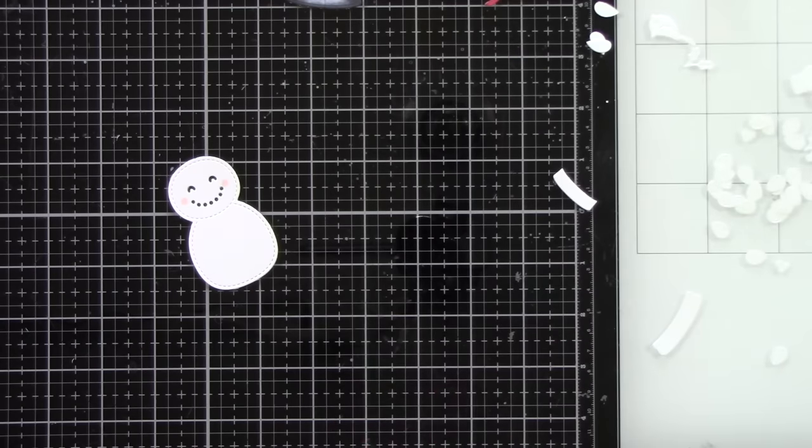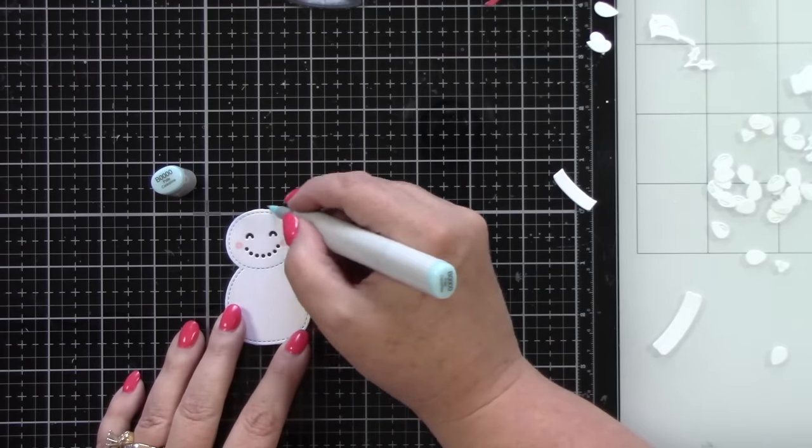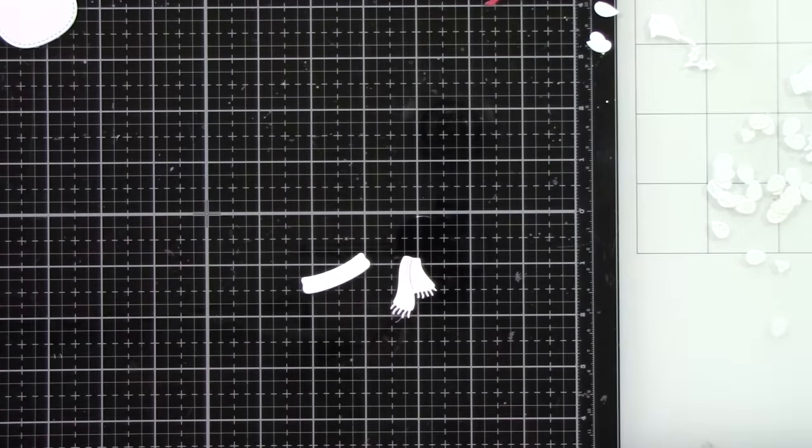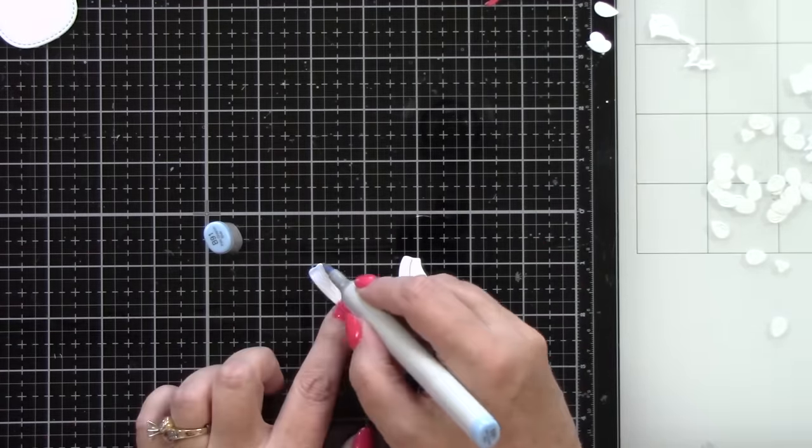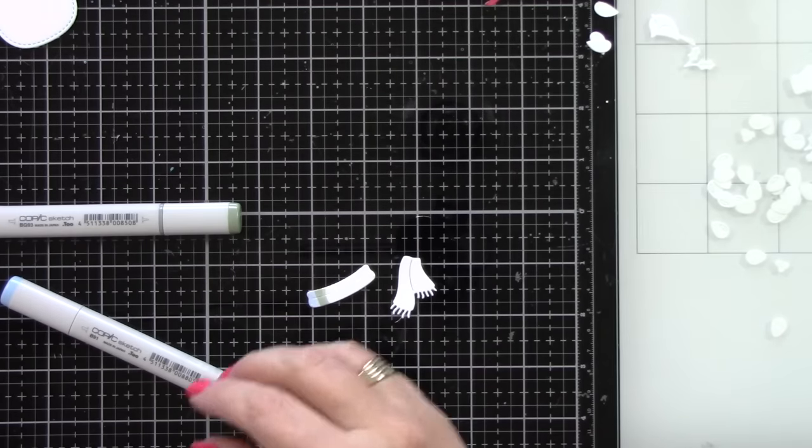He has his little band. First actually I have to go back and I decided to go with B0000 to go around the snowman to give him a little bit of blue color so it feels like he's got snow.